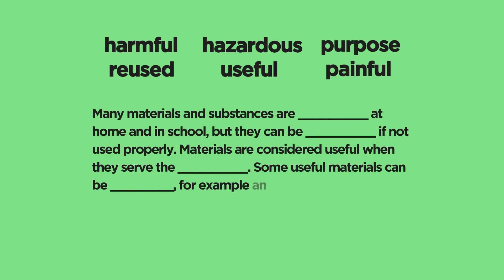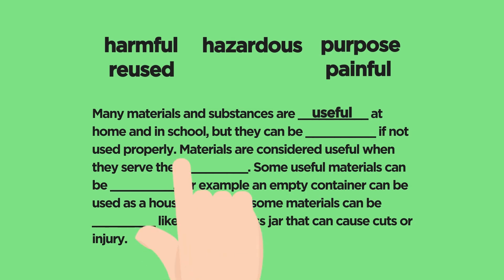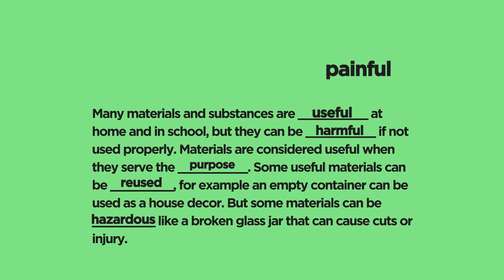I hope you did! Now, let's check what you have learned. Complete this paragraph using the words in the box: harmful, hazardous, purpose, reused, useful, painful. Many materials and substances are useful at home and in school, but they can be harmful if not used properly. Materials are considered useful when they serve their purpose. Reused — for example, an empty container can be used as a house decor. But some materials can be hazardous, like a broken glass jar that can cause cuts or injury.